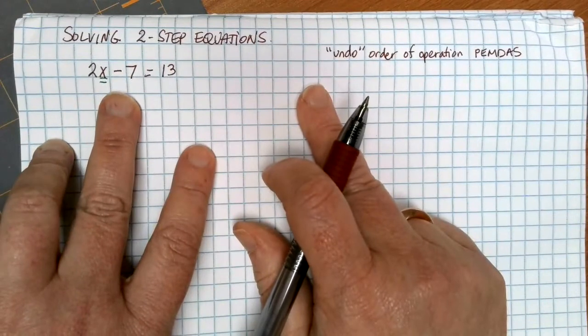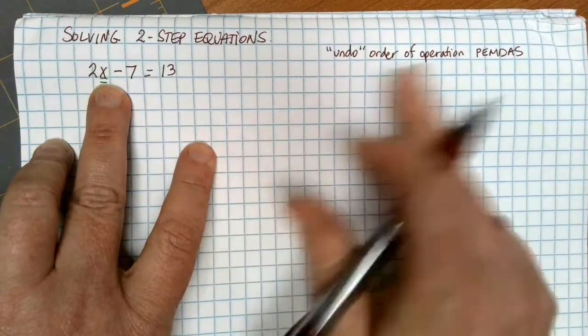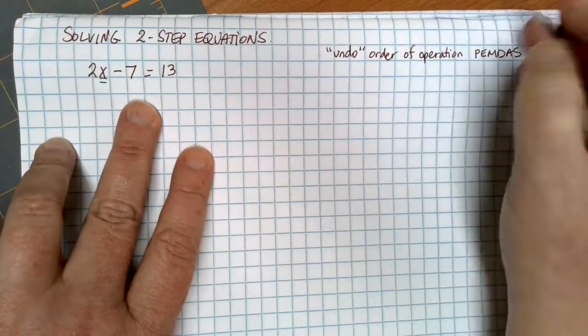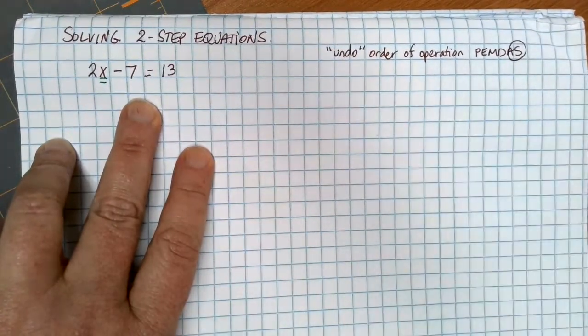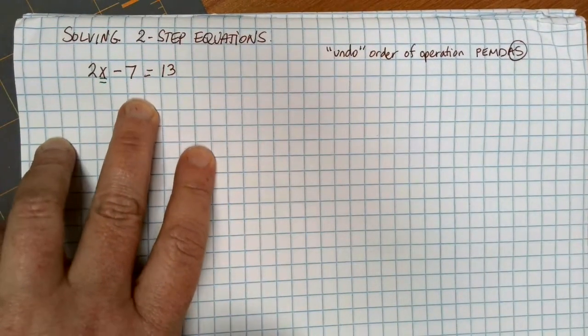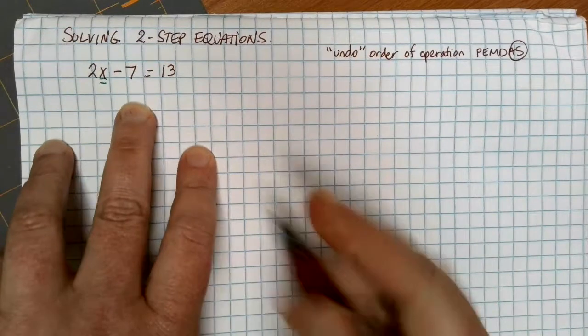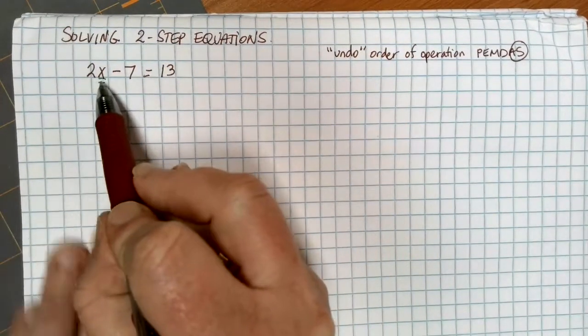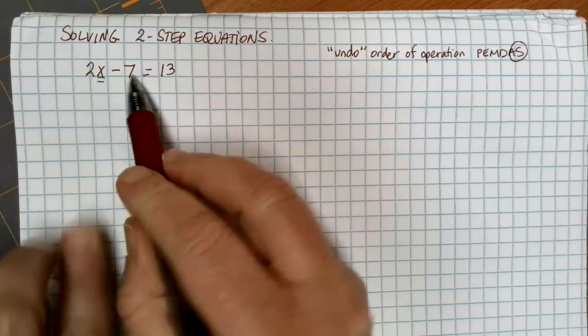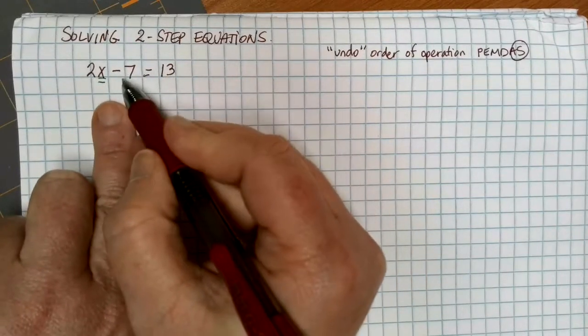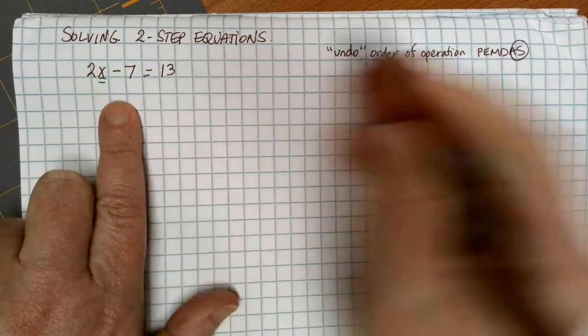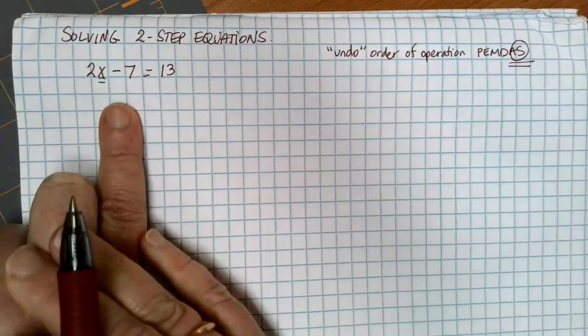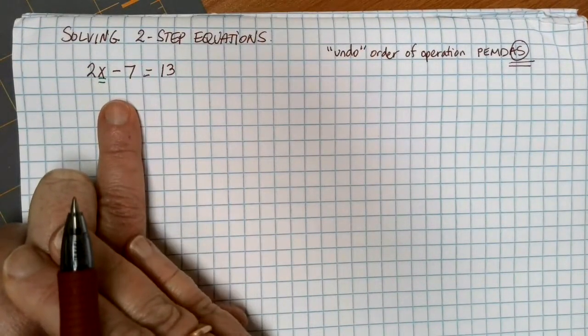When we're solving two-step equations, we want to get the x alone. If we're undoing the order of operations, that means we have to start at the weakest link. What's the very last thing that's happening? Following order of operations, x would be multiplied by 2, and then we'd subtract 7. So when we're undoing things, we first have to undo the subtract 7. So we're always going to prioritize getting rid of things that are added and subtracted first.